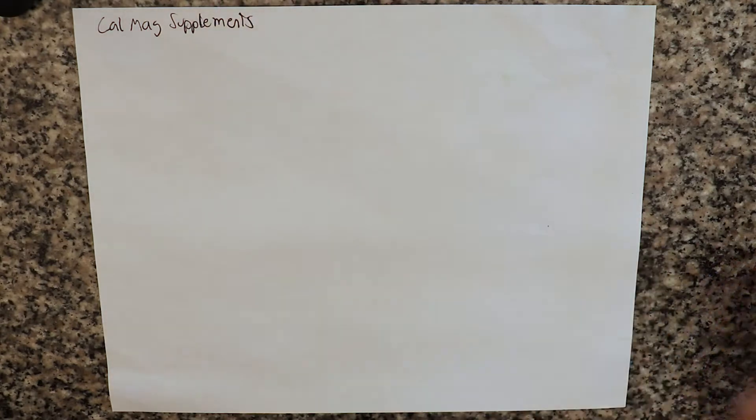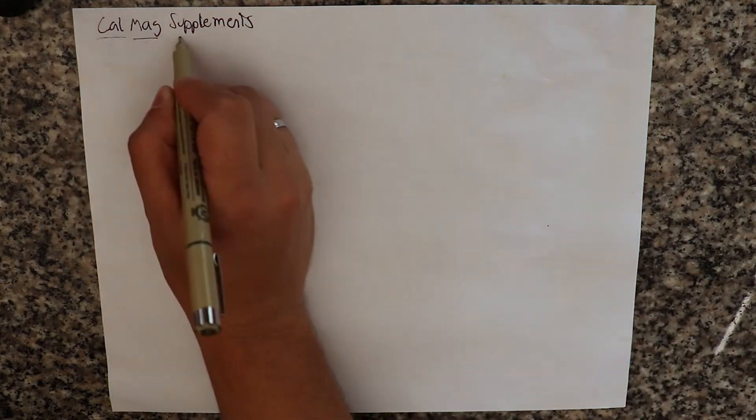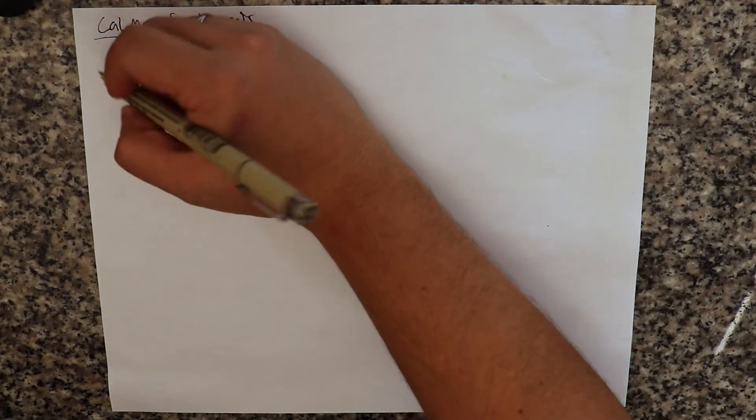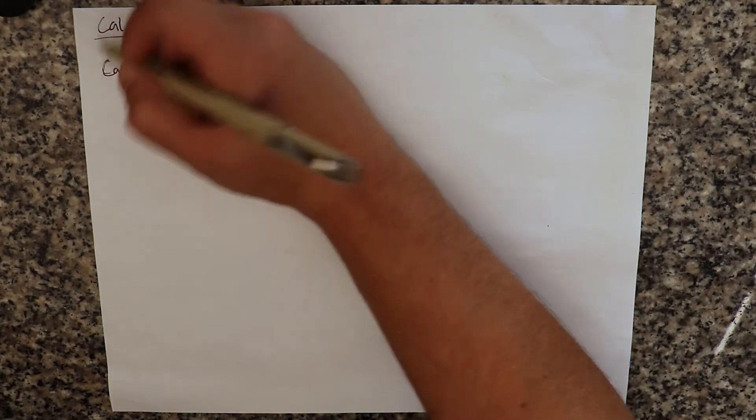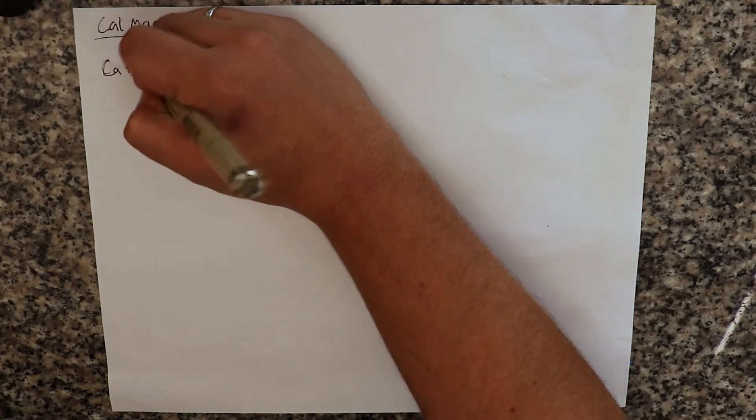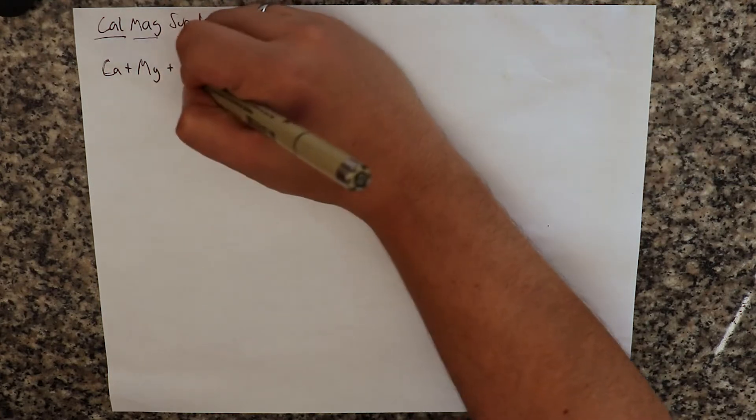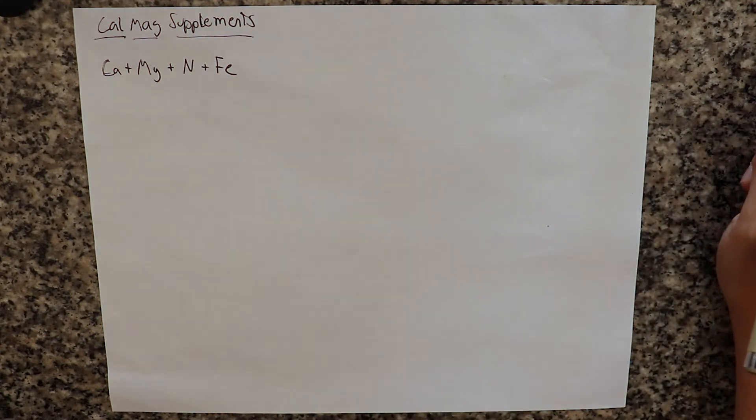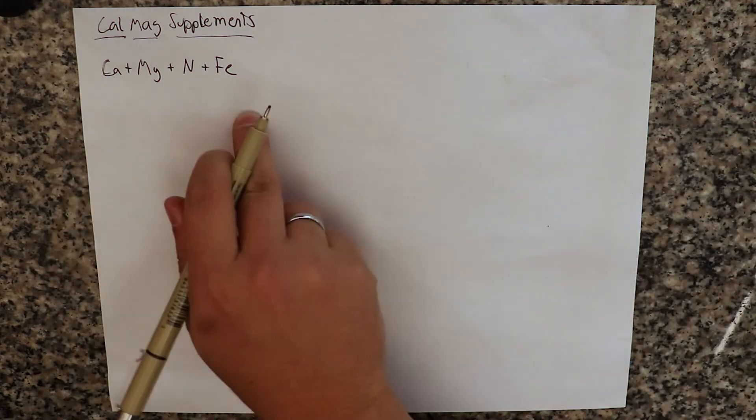So today I am going to talk about what these supplements are and how they are usually made in the industry and how you can make one of your own. So CalMag supplements are a group of supplements that are normally composed of calcium, magnesium, but they also have nitrogen and they also have iron. So this is the common makeup of a CalMag supplement.